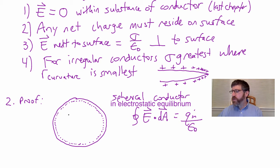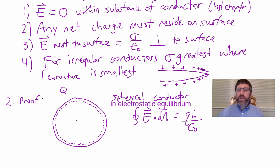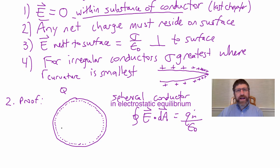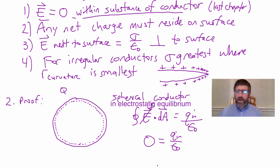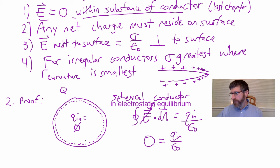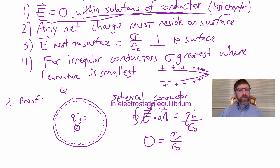Imagine this conductor has some charge Q on it. What is the field strength on this Gaussian surface, which is within the substance of the conductor in electrostatic equilibrium? From property one, the E-field is zero within the substance of the conductor, and that's where my Gaussian surface is. So everywhere on the Gaussian surface, the field is zero, which means the entire flux integral is zero. Therefore Q-enclosed over epsilon naught equals zero, meaning Q-enclosed equals zero — there can be no charge within that Gaussian surface.